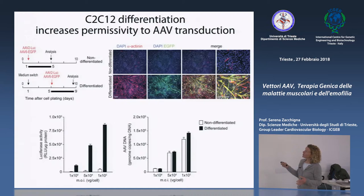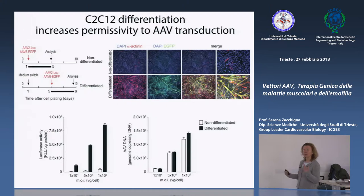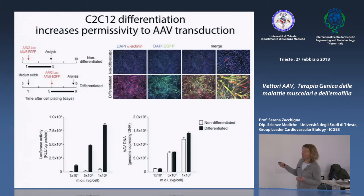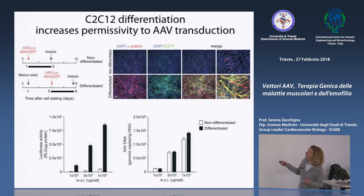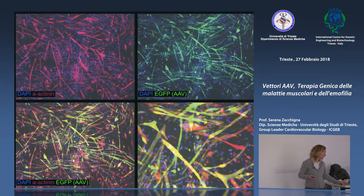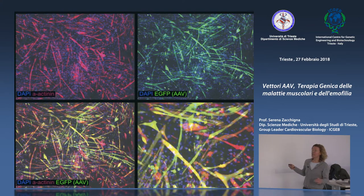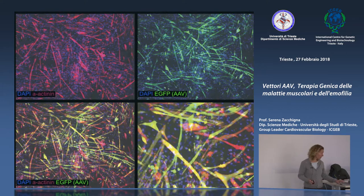Nel muscolo scheletrico si osserva lo stesso fenomeno usando cellule C2C12: i mioblasti, ancora proliferanti, sono non permissivi ad AAV; quando si differenziano in miotubi, diventano permissivi. I livelli di MRN11 nei mioblasti sono molto alti, ma man mano che la cellula si differenzia si abbassano, consentendo al vettore di esprimere il gene terapeutico.